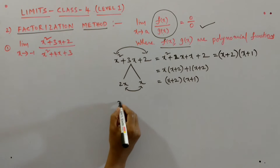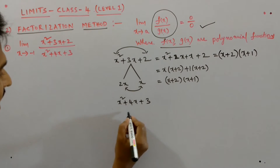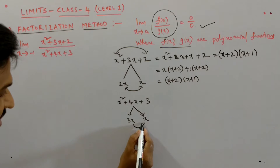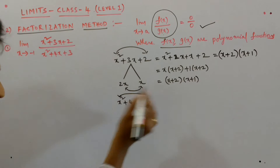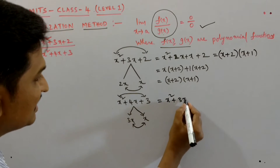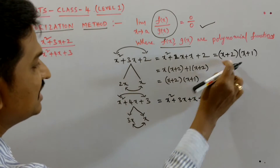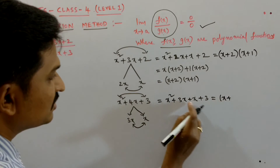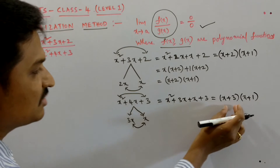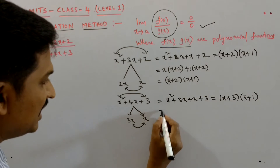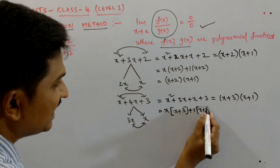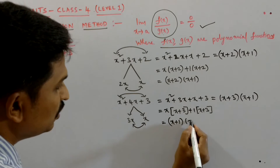Now I will find the factors of x squared plus 4x plus 3. I will split the middle term: 4x can be written as 3x plus x. When I multiply those two terms, I should get the product of the outer terms — 3 into x squared is 3x squared. So x squared plus 4x plus 3 is written as x squared plus 3x plus x plus 3. Taking x common from the first two terms gives x plus 3, and taking 1 common from the last two terms gives x plus 3. So it equals x plus 1 into x plus 3. Directly, the coefficients give us x plus 3 into x plus 1.